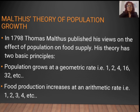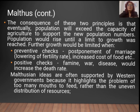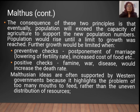These are the two principles of Malthus theory. The consequence of these two principles is that eventually population will exceed the capacity of agriculture to support the new population numbers. Population would rise until a limit of growth was reached, and further growth would be limited.